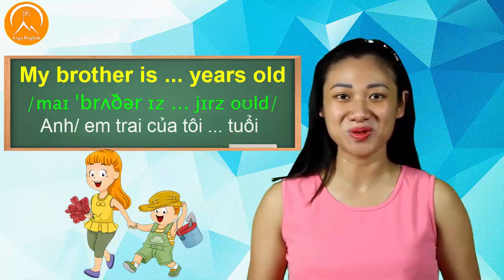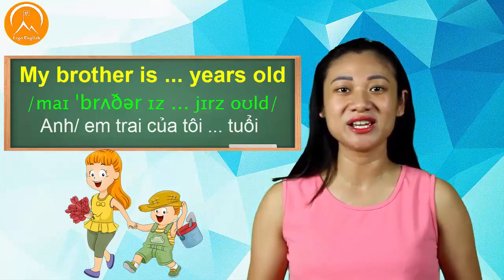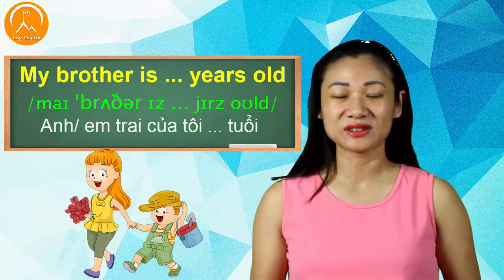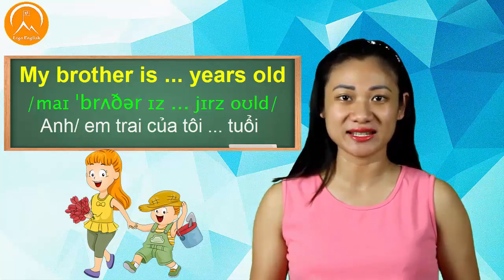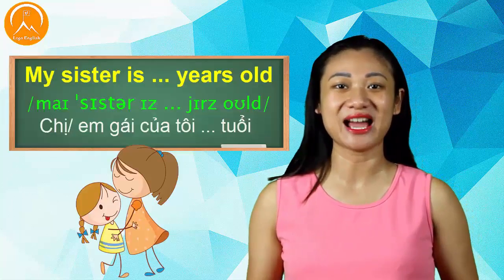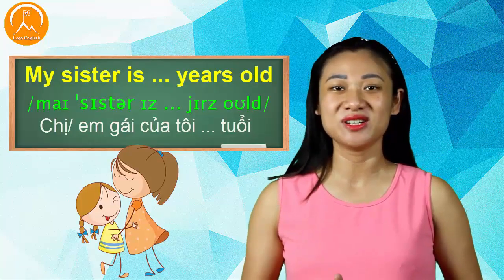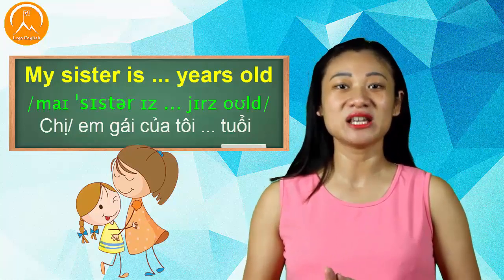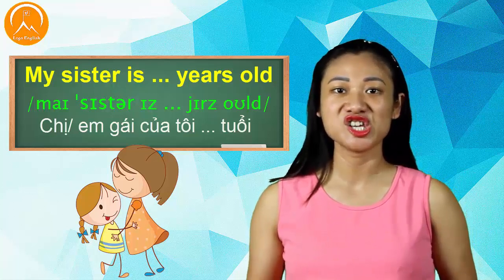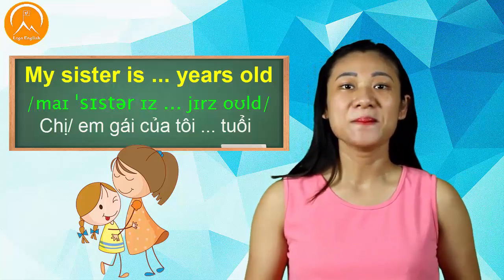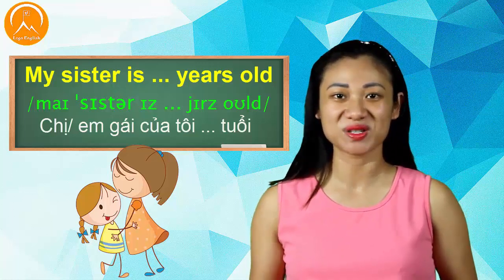Nếu các bạn có anh hoặc em trai thì hãy nhớ lại xem anh hoặc em trai của mình bao nhiêu tuổi và điền vào: "My brother is ___ years old". Và nếu các bạn có chị hoặc em gái, hãy tìm số trong tiếng Anh và tập nói: "My sister is ___ years old".